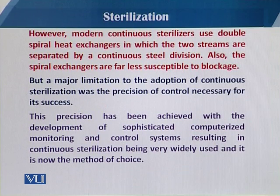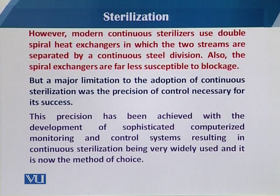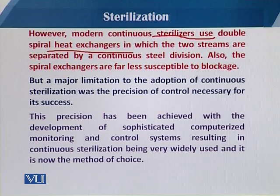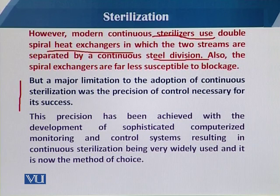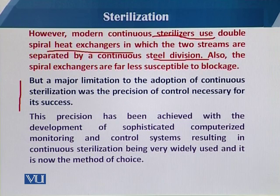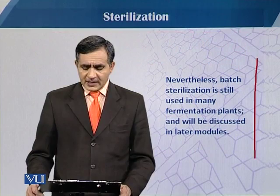Modern continuous sterilizers use double spiral heat exchangers, in which the two streams are separated by continuous steel divisions. The spiral exchangers are far less susceptible to blockage. The major limitation to adopting continuous sterilization was the precision of control necessary for its success. This precision has been achieved with the development of sophisticated computerized monitoring and control systems, resulting in continuous sterilization now being widely used and the method of choice in industrial fermentations.